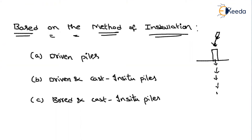The load carrying capacity of driven piles can be due to end bearing or friction. These piles can be made of wood, metal, or concrete. Since external force is applied for driving, a steel cap is used on top for the safety of the material.